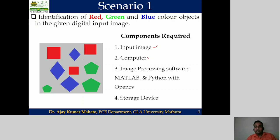Next, we need a computer, and in that computer we need some image processing software like MATLAB or Python with OpenCV. Using this software, we write a piece of code that gives the output — the identification of the red, green, and blue color objects. Finally, those output images are stored in some storage device, such as a hard disk or a pen drive.